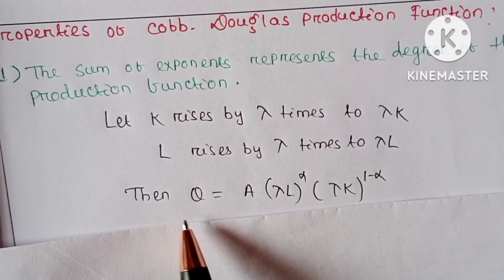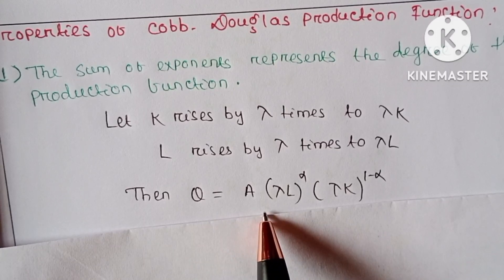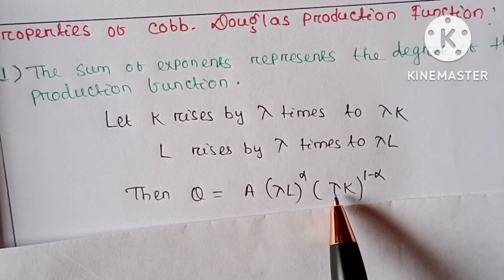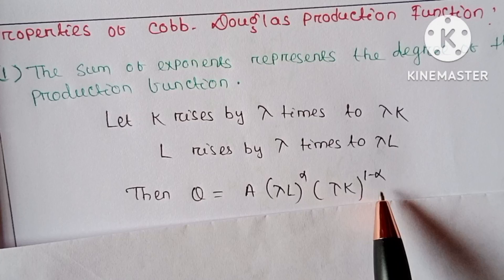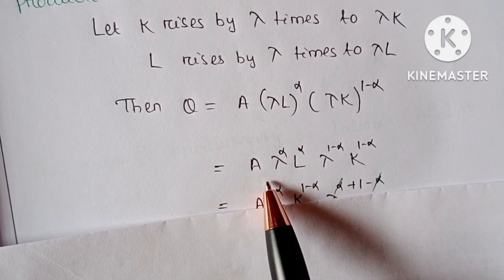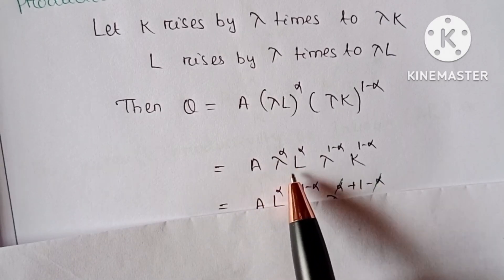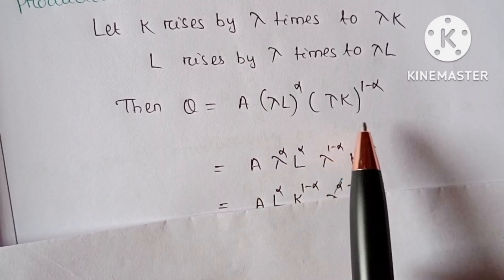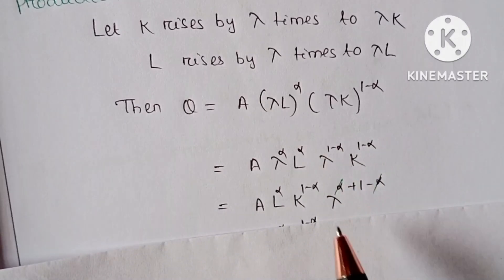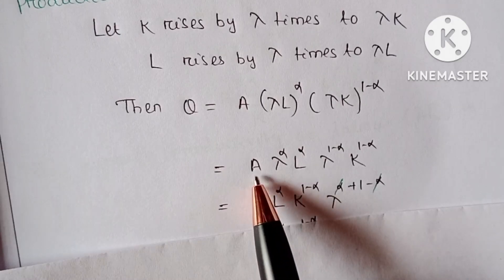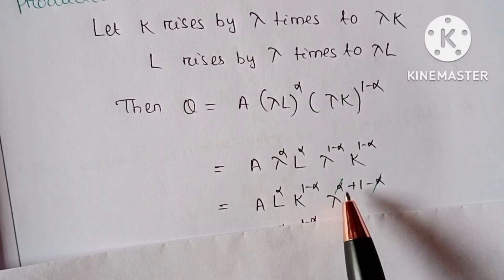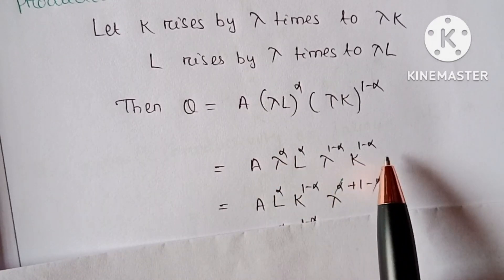The new output function Q is equal to A into (lambda times L) whole power alpha, into (lambda times K) whole power 1 minus alpha. After removing the bracket, we get A into lambda to the power alpha into L to the power alpha, into lambda to the power 1 minus alpha into K to the power 1 minus alpha. Rearranging, we get A into L to the power alpha into K to the power 1 minus alpha, into lambda to the power alpha plus 1 minus alpha.